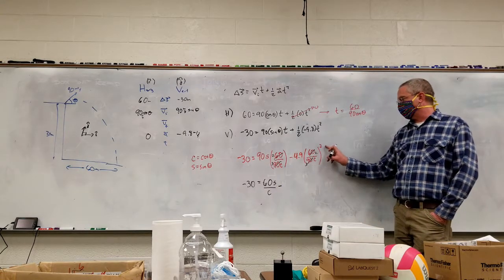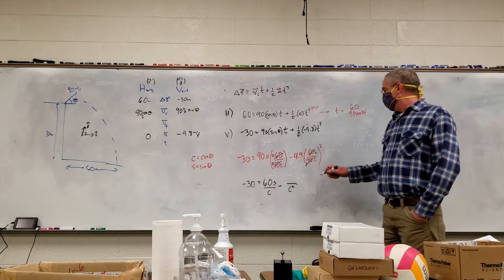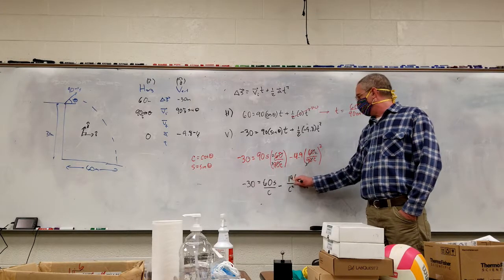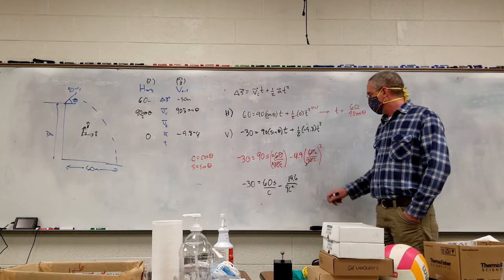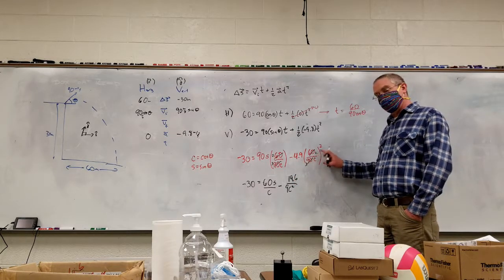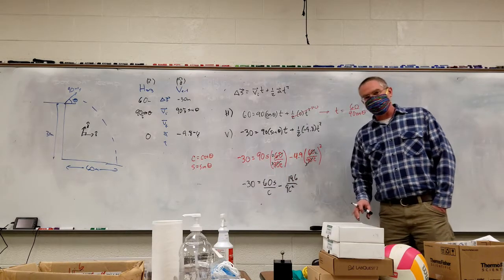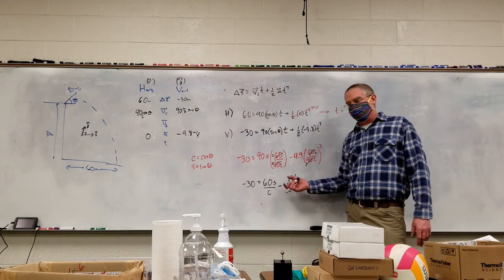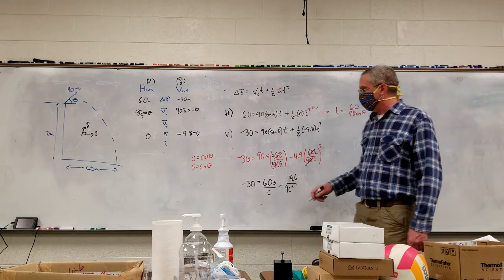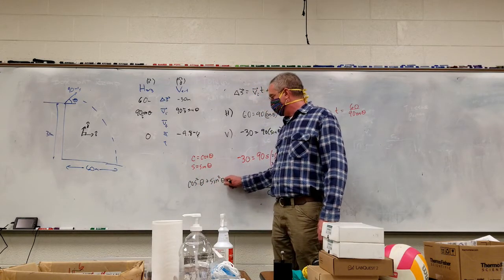So we end up with: −30 = 60S/C − (4.9)(4/9)(1/C²), which gives −30 = 60S/C − 19.6/(9C²). If I want everything in terms of cosine, I'm going to solve for sine and then square it, because cosine² + sine² = 1. Take any angle, find cosine² plus sine², and you'll get 1.